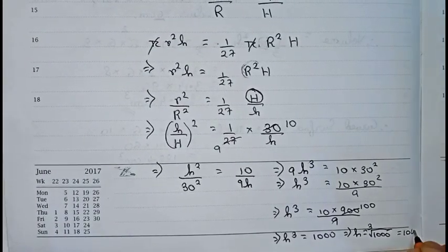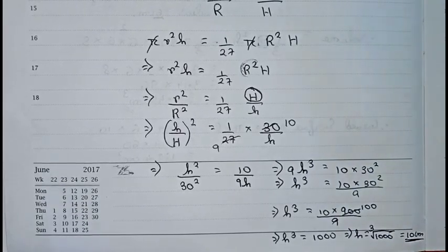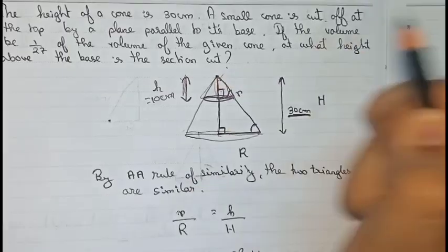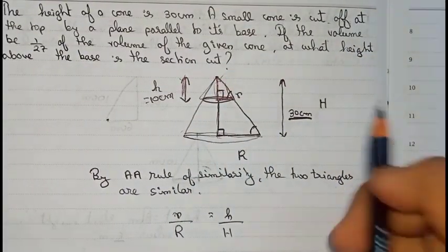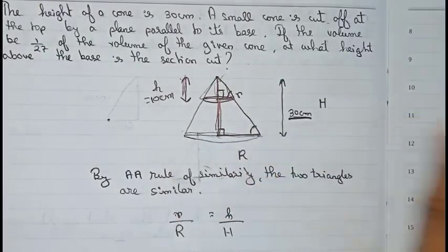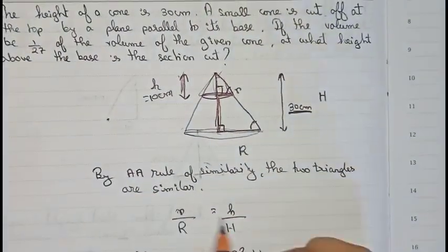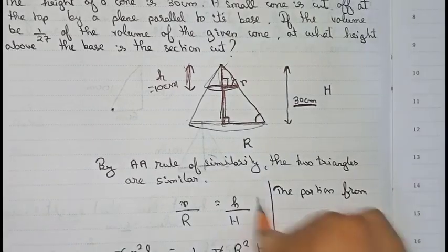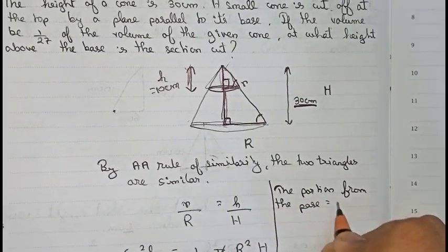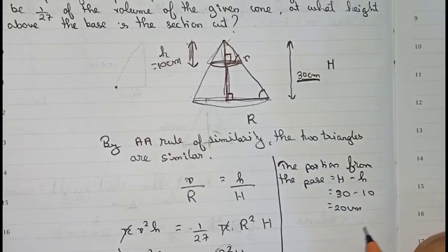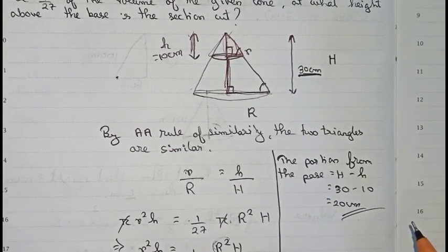So the height of the small cone is 10 centimeters. But the question asks for the height above the base where the section is cut. That portion equals H minus small h = 30 minus 10 = 20 centimeters. So 20 centimeters is our final answer. Thanks for watching — please subscribe for more solutions.